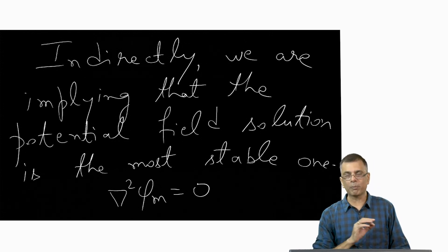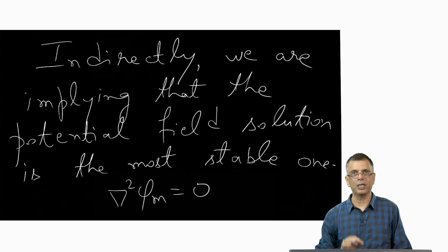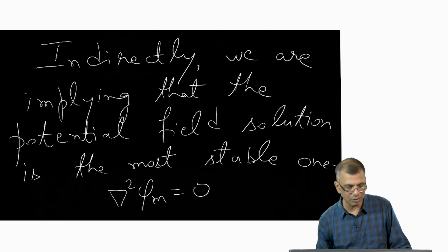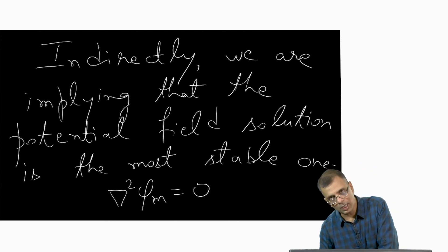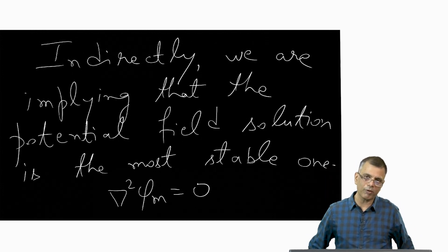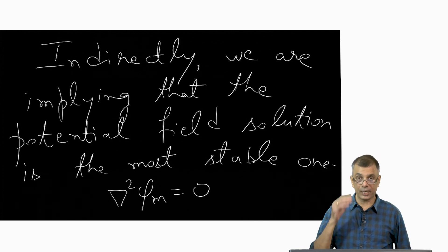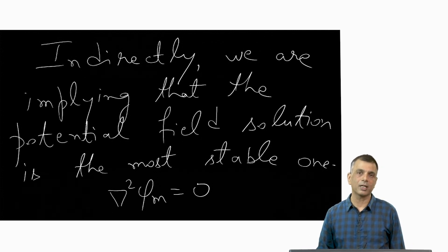The potential field solution is closely related to the force-free solution, because a force-free solution is also one where no extra Lorentz forces act — so it also tends to be an equilibrium or stable solution. The potential field solution is another kind of equilibrium solution: it is the lowest energy configuration, so it is the configuration that all other configurations will try to come down to. The potential field solution is the minimum energy solution. These useful concepts all arise from the curious way in which magnetized plasmas behave.